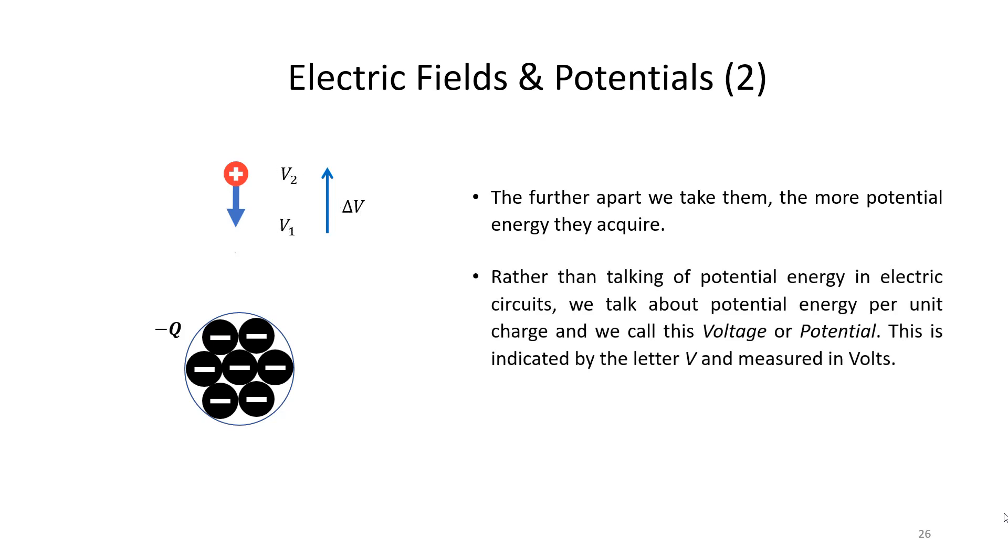However, in electric circuits, instead of talking about potential energy, we talk about potential energy per unit charge, and we call it something else. We call it voltage, or potential, or electric potential, and this is indicated by the letter V, and is measured in volts. So we have replaced in the diagram Pe1 with V1, and Pe2 with V2.